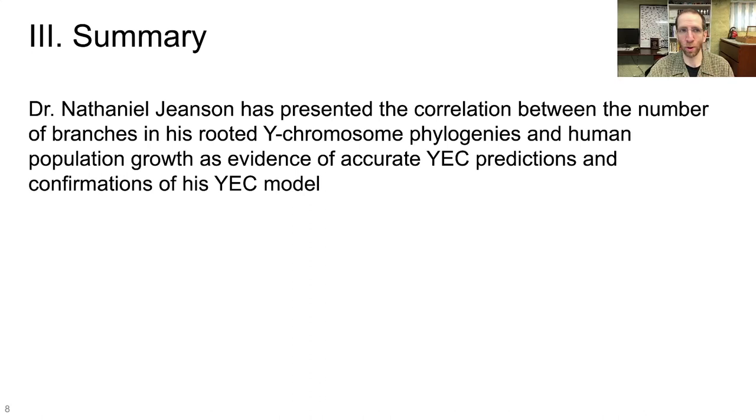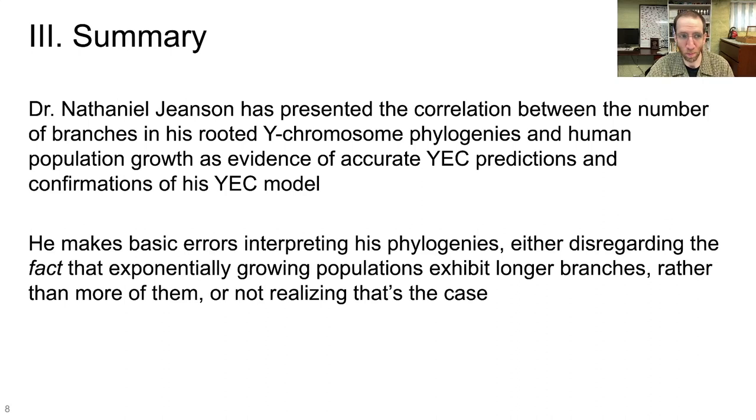So in the summary, Dr. Nathaniel Jeanssen has presented the correlation between the number of branches on his rooted Y chromosome phylogenies and recent human population growth as evidence of accurate young earth predictions and confirmation of his, and therefore AIG's, young earth model. He makes basic errors interpreting his phylogenies, either disregarding the fact that exponentially growing populations exhibit longer branches, rather than more of them, or he doesn't realize that this is the case.